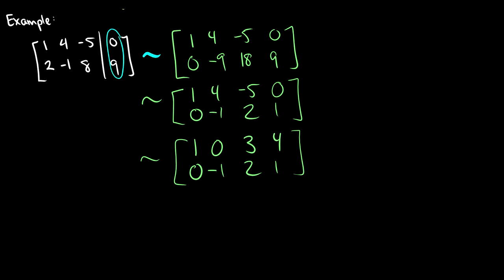So what does this say? This says that x1 plus 3x3 is equal to four, and it says that negative x2 plus 2x3 is equal to one. So we can solve for x1 and x2.